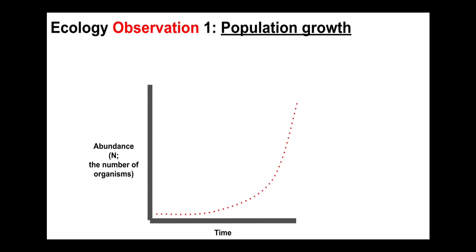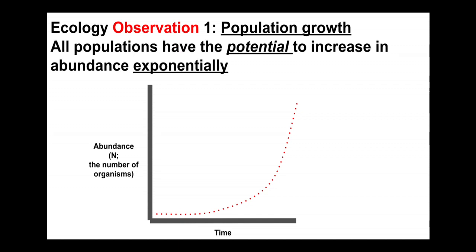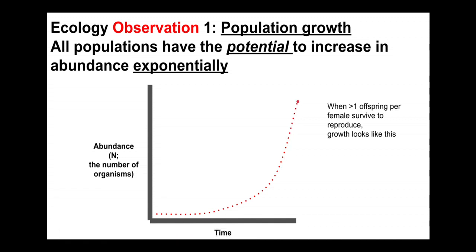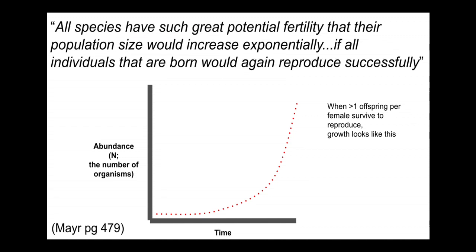Darwin's first ecological observation had to do with population growth: all populations have the ability to increase exponentially. When populations are small and have a lot of resources, they will increase at an increasingly rapid rate — getting bigger and bigger, then rapidly increasing in size. This happens any time more than one offspring per female survive to reproduce. When each female produces on average just one child that goes on to reproduce, she's just replacing herself; but when she produces more than one on average, you'll see exponential population growth.